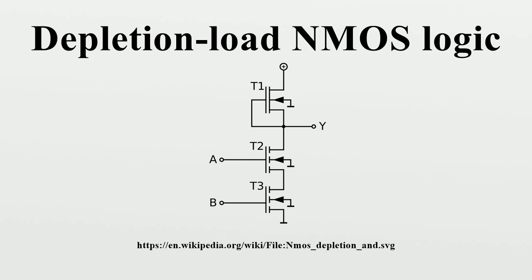Depletion load processes differ from their predecessors in the way the VDD voltage source connects to each gate. In both technologies, each gate contains one NMOS transistor which is permanently turned on and connected to VDD. When the transistors connecting to zero turn off, this pull-up transistor determines the output to be one by default. In standard NMOS, as the output voltage approaches a value less than VDD, it gradually switches itself off, slowing the zero-to-one transition. Depletion load processes replace this with a depletion mode NMOS at a constant gate bias with the gate tied directly to the source, acting as a current source until the output approaches one, then as a resistor — resulting in a faster zero-to-one transition.